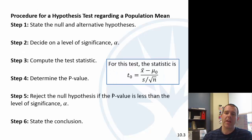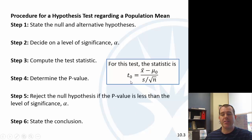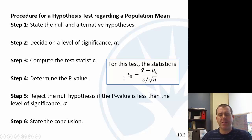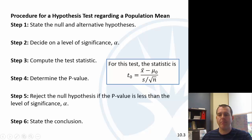Let's look at a particular example. Here are the steps again. The test statistic is a t now. This should hopefully look familiar from the confidence intervals, where we had the t test statistic x-bar minus mu over s over square root of n. Same steps here, 1 through 6. We just have a different test statistic basically.